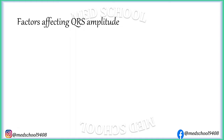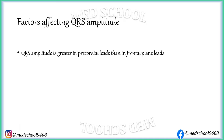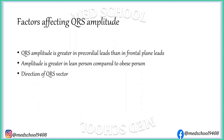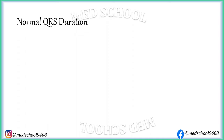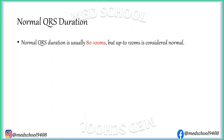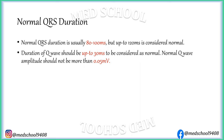QRS amplitude is affected by multiple factors. Amplitude of QRS complex is normally greater in precordial leads than in frontal plane leads. Amplitude is greater in a lean person than in an obese person because there is less intervening insulation tissue between electrodes and heart. Normal QRS duration is usually 80 to 100 ms but up to 120 ms is considered normal. Duration of Q wave should be less than 30 ms and its amplitude should not be more than 0.05 mV, that is half a small box. Normal QRS axis is directed within plus 40 to plus 60 degrees in the frontal plane.